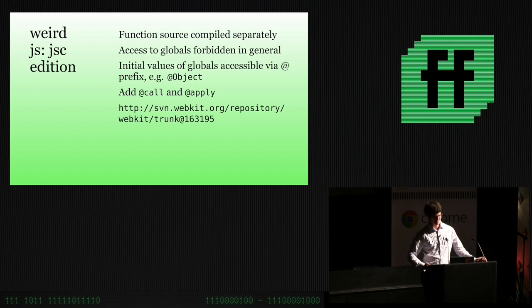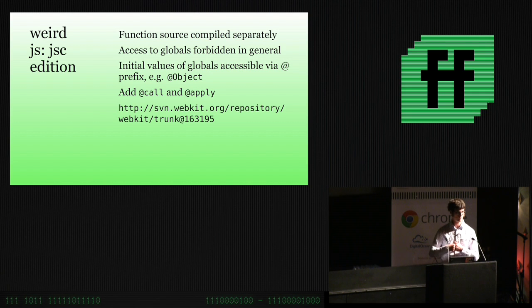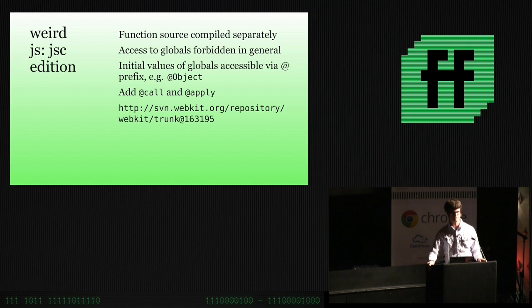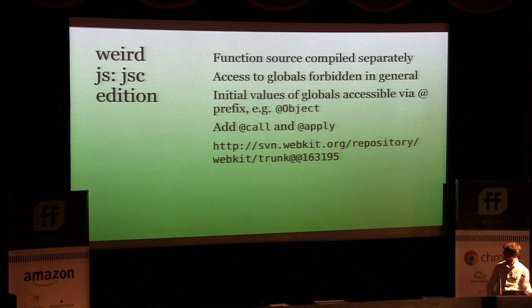The thing is, the JavaScript that's in these implementations is weird JavaScript. Technical term. It means it runs in a different environment. It's weird in three different flavors: JavaScript Core flavor, SpiderMonkey flavor, and V8 flavor. In JavaScript Core flavor, each function is compiled on its own, extracted as a string and bound to the name. The first time you call it, it's going to be parsed and compiled. It has some weird scoping issues. You can't access any globals in it, but you can access initial values of globals.